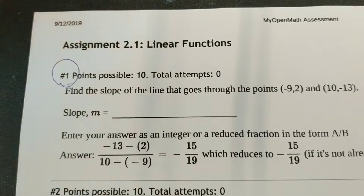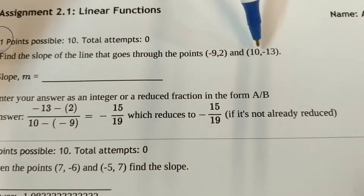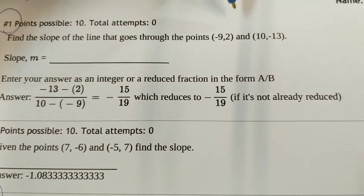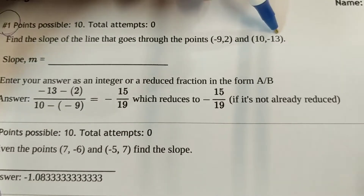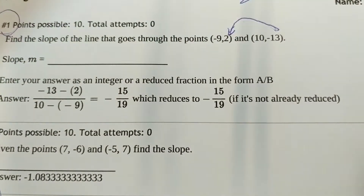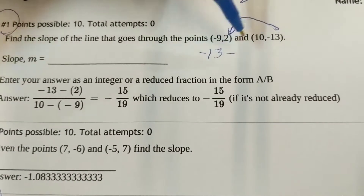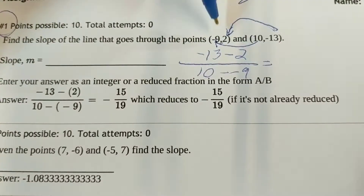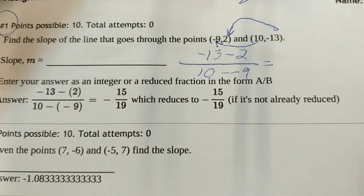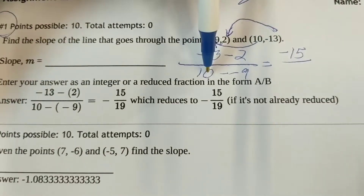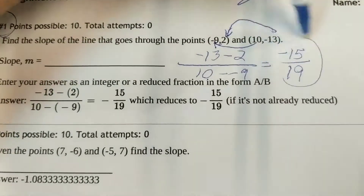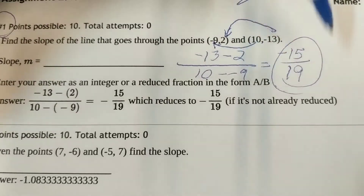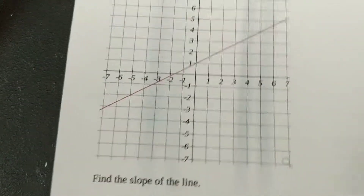Thoughts on 2.1 homework. Number one: we need to find the slope between the points (negative 9, 2) and (10, negative 13). You can draw it or use the slope formula: take the second Y minus the first Y, that's negative 13 minus 2, over the second X minus the first X, that's 10 minus negative 9. So negative 15 over 19 — that sounds good.